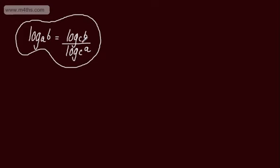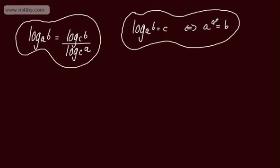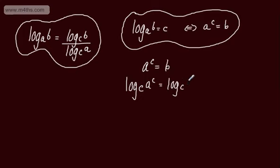Let's look at deriving this. We start with the original statement: if log to the base A of B equals C, then the exponential equivalent is A to the power of C equals B. Picking up at this point, I'm going to write A to the power of C is equal to B, then take logs of both sides of the equation using base C. So we have log to the base C of A to the power of C is equal to log to the base C of B.